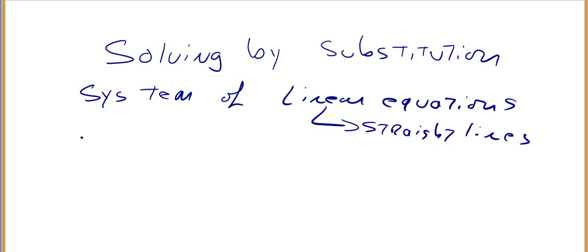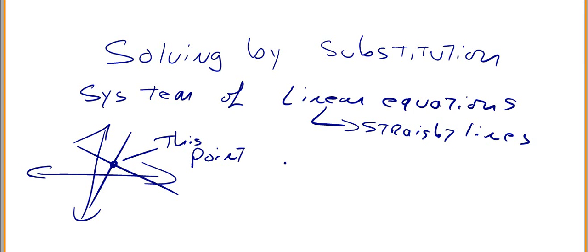Basically if you remember from when we did this with graphing, we had two lines. We wanted to know this point where they meet. There are three options here: they can intersect, they can be parallel, or they can be the same line.